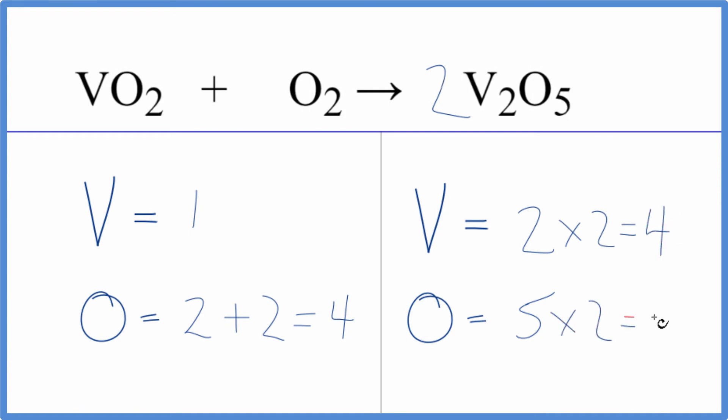All right, maybe we can work with this. Let's just put a four in front of the VO₂ and see what happens. One times four, that balances the vanadium. Let's update the oxygen. We have two times four that's eight, plus these two right here we get ten and we're done. That's the balanced equation for VO₂ plus O₂.